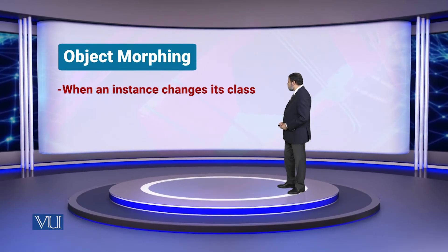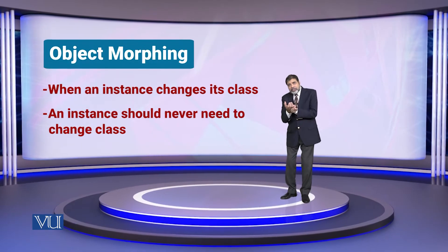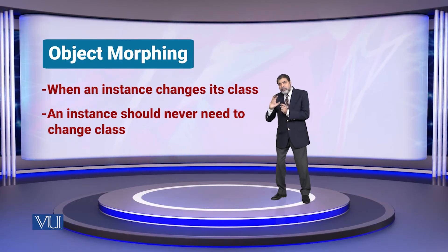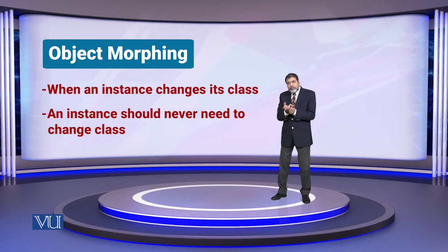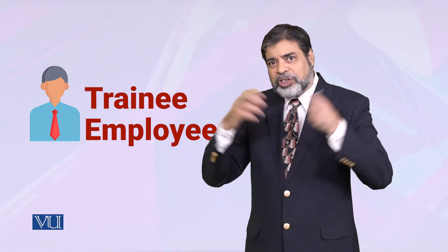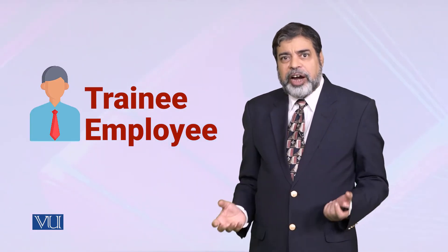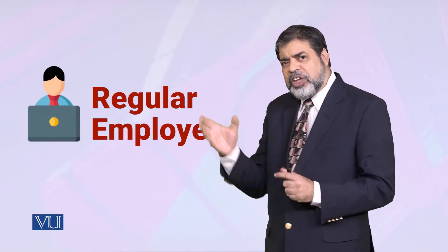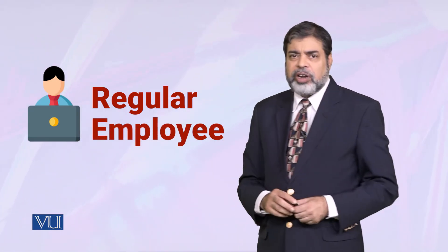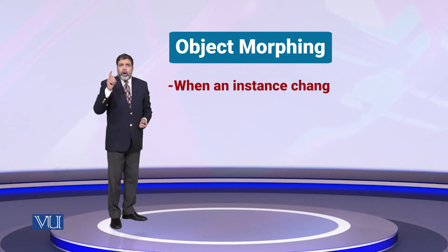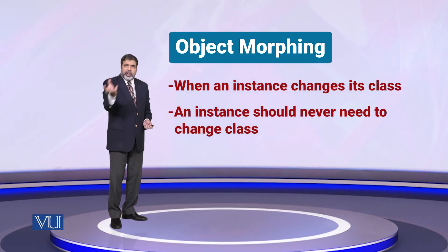Object morphing means the object has changed its class. The object — the employee — was the same, but its classification had changed. The object had changed, yet it was not re-created with a new identity.